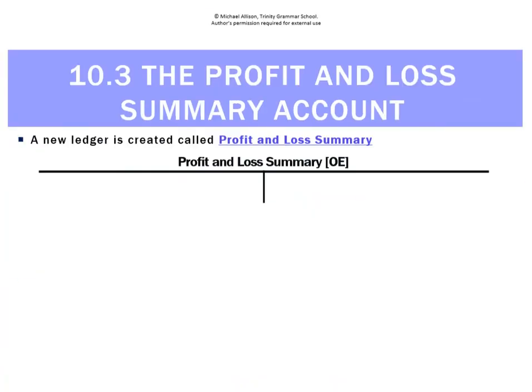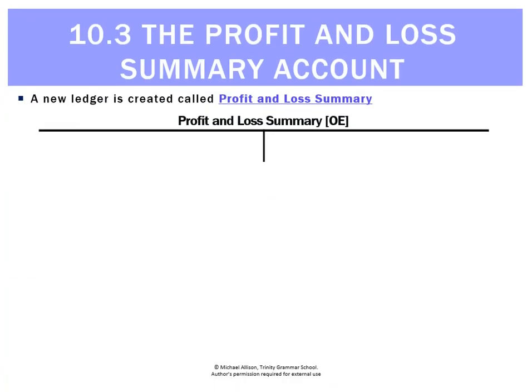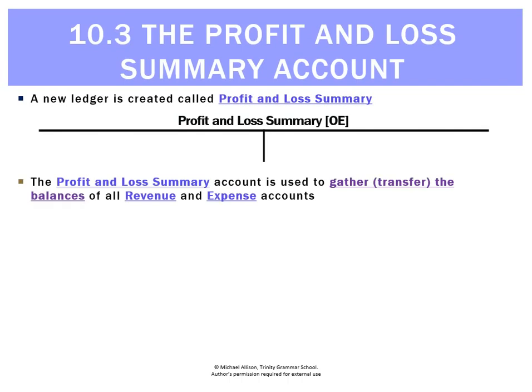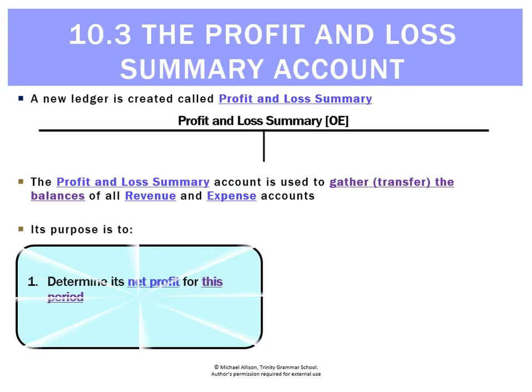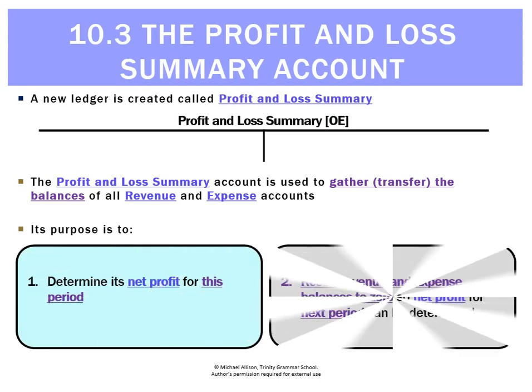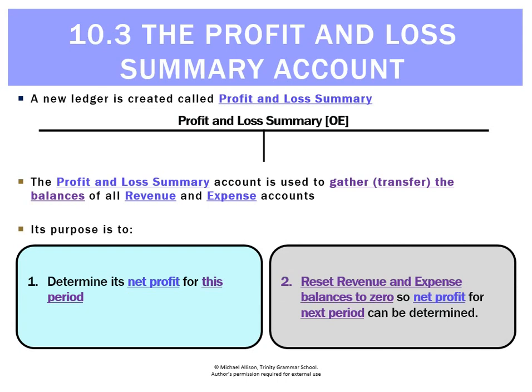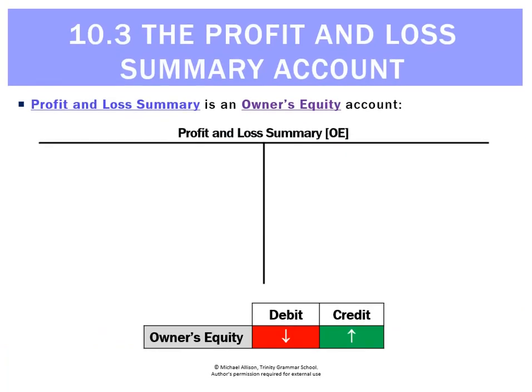What we're going to do is create a new ledger or new account called the Profit and Loss Summary account. That's used to gather or transfer the balances of all revenue and expense accounts. It'll help us do two things: firstly, calculate net profit for this period, and secondly, reset revenue and expense balances to zero so that net profit for the next period can be determined.